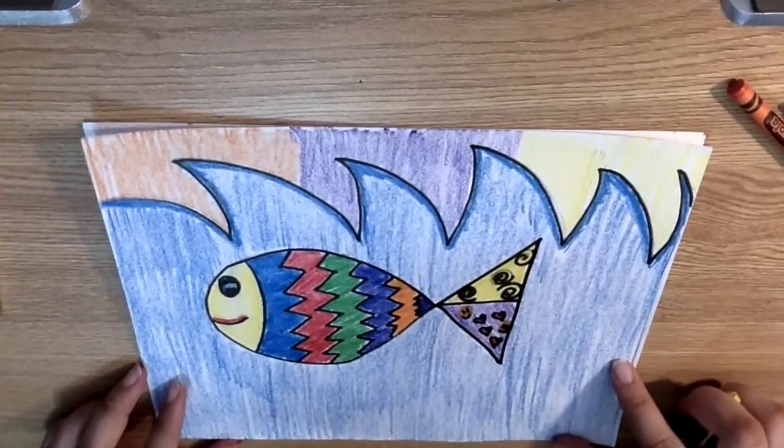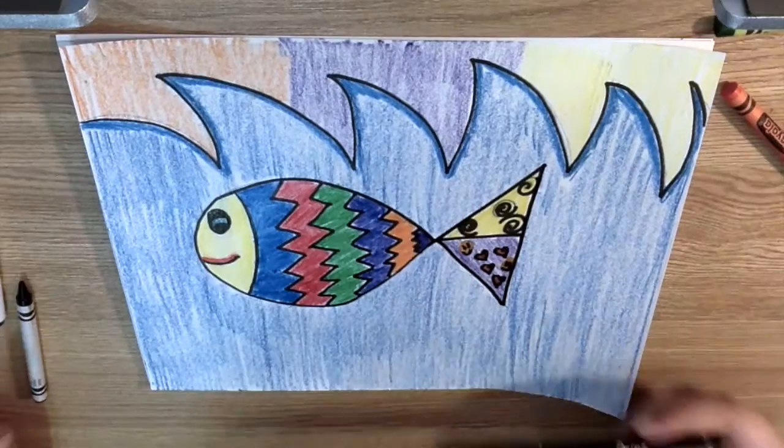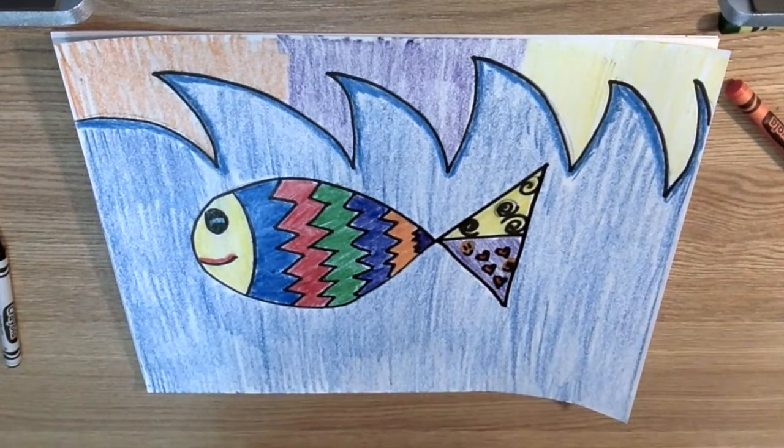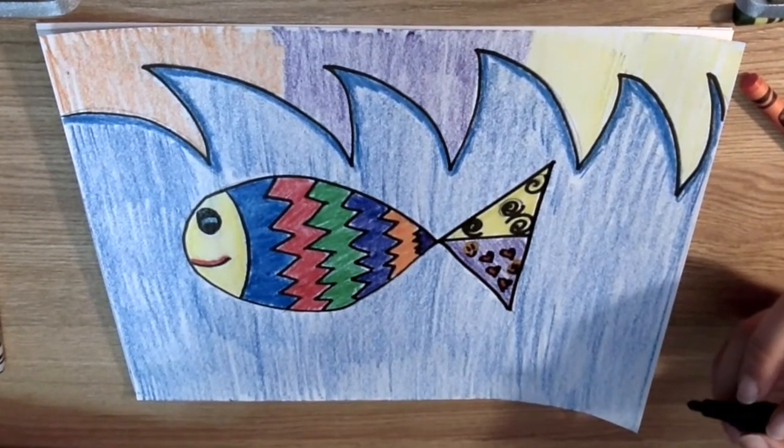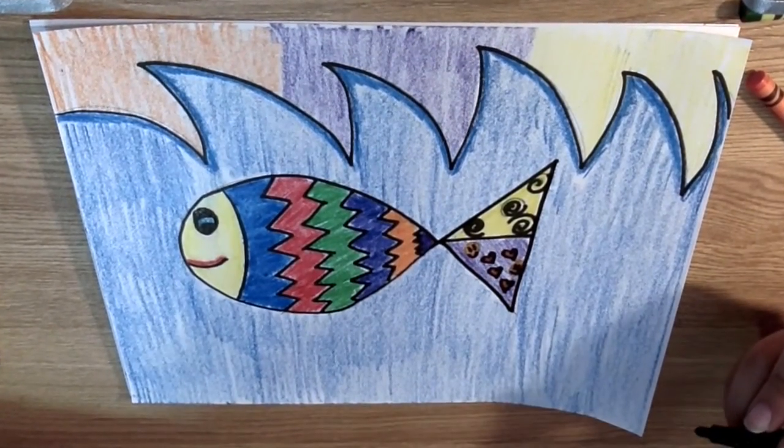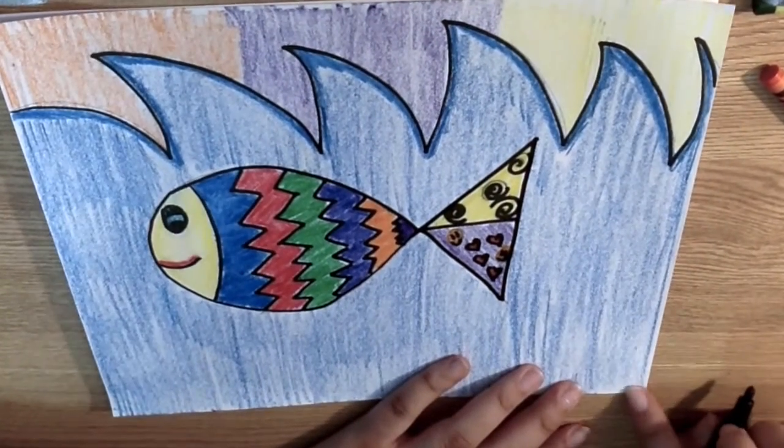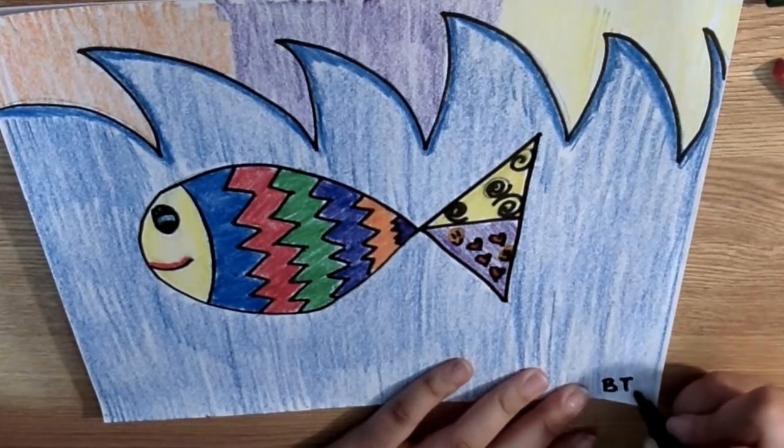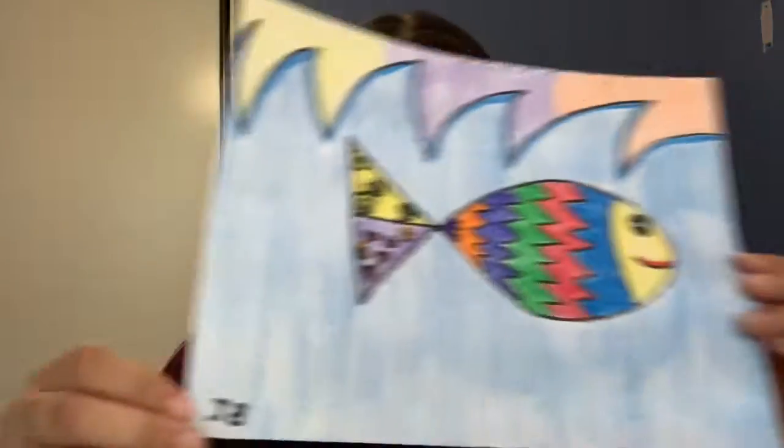We're finished. We have our very own rainbow fish. Grab your black marker or your black crayon, I'll use my marker again, and use the first letter of your first name and the first letter of your last name and put it right here in this little corner. And that is your artist signature.